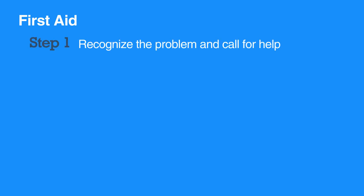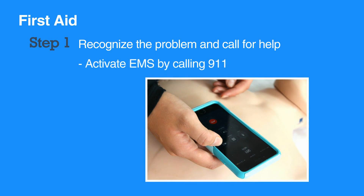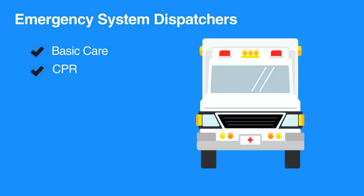Now let's discuss the first aid basics. The first step is to recognize the problem and call for help. Activate EMS by calling 911. The operator will ask you a series of questions to determine the seriousness of the illness or injury. Remain on the line until more advanced help arrives or until the operator instructs you to hang up. Emergency system dispatchers can guide you through delivering basic care, performing CPR, or using an AED until additional help arrives.